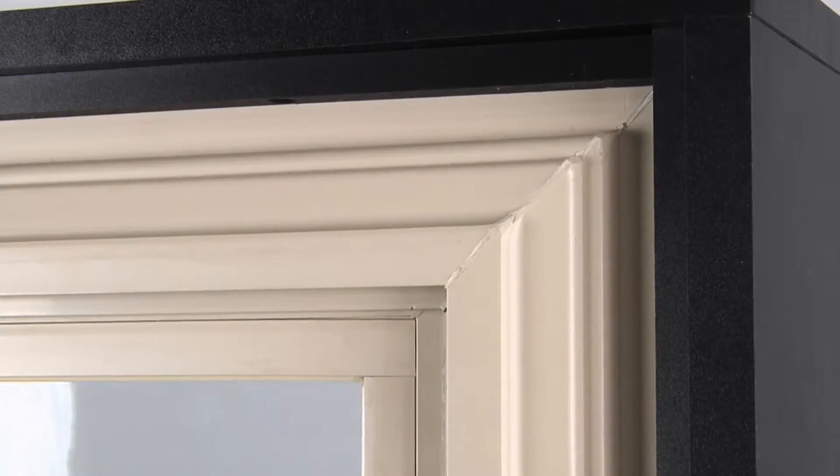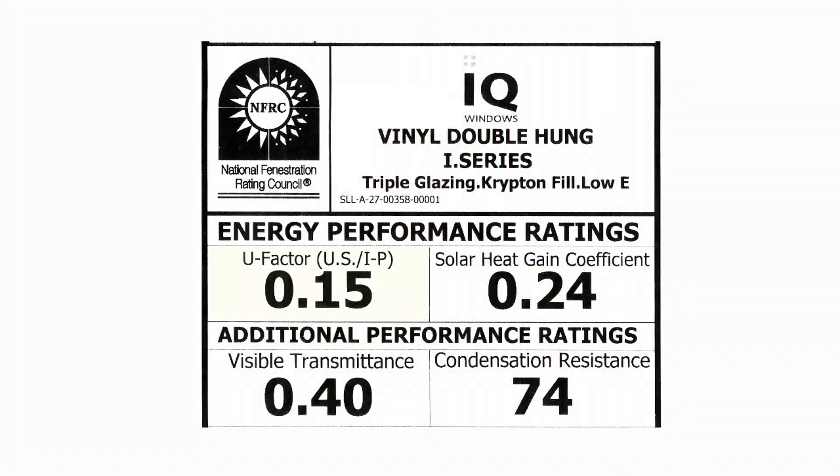The Ultimate IQ Glass System delivers a stellar NFRC 0.15 U-factor that's two times better than ENERGY STAR's 0.30 minimum U-factor, 0.24 solar heat gain coefficient, 0.40 visible transmittance.